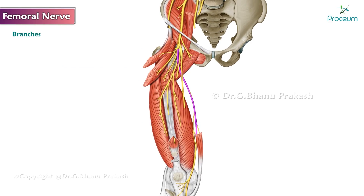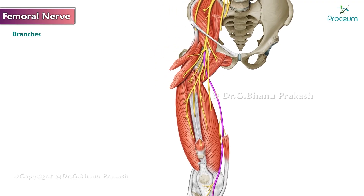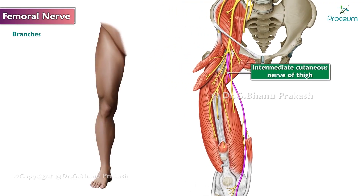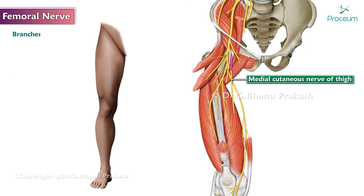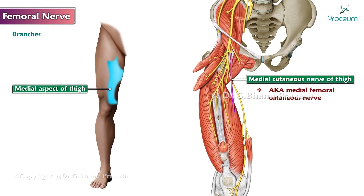The femoral nerve terminates as the saphenous nerve in the leg. The intermediate cutaneous nerve of the thigh gives cutaneous innervation to the skin over the anterior aspect of the thigh. The medial cutaneous nerve of the thigh, also known as the medial femoral cutaneous nerve, supplies the skin over the lower two-thirds of the medial aspect of the thigh.